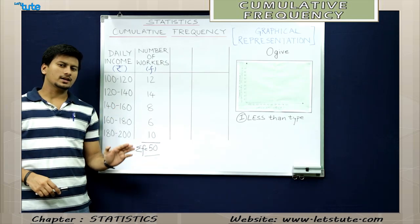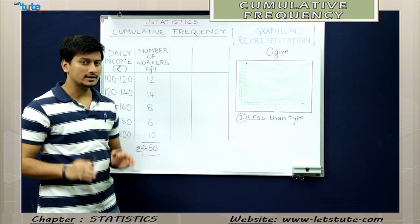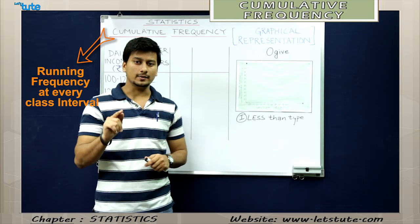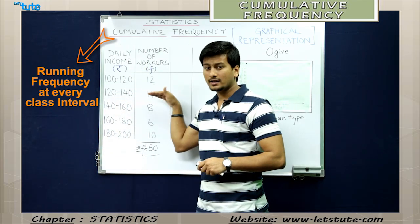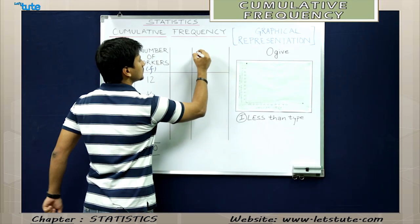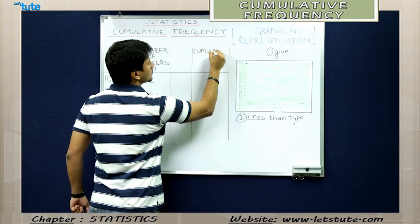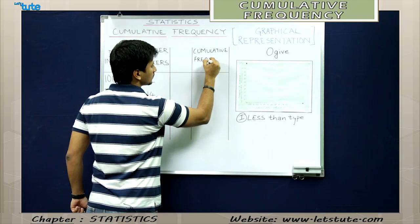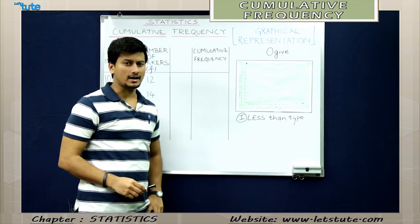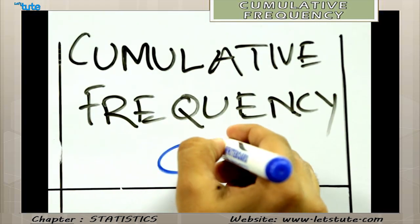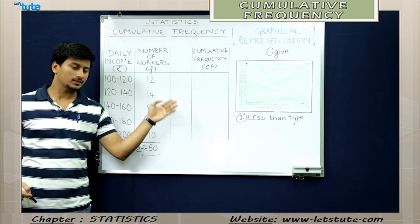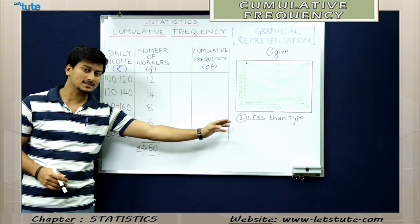A frequency distribution can be easily converted into a cumulative frequency distribution. Cumulative frequency is nothing but the running frequency — that means we add frequencies at every single stage. Let's form a column for cumulative frequency, also denoted as CF. Now before we calculate the cumulative frequencies, let's come back to why it's called the less than type.